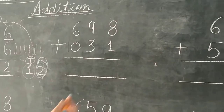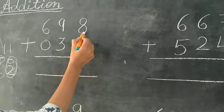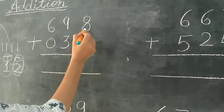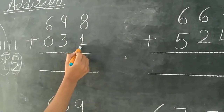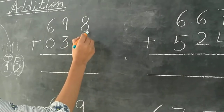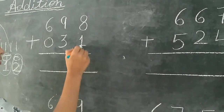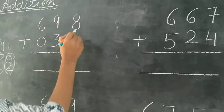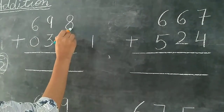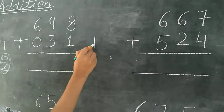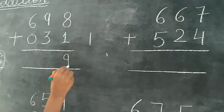Now next sum. 8 plus 1. Aapko 8 mein 1 plus karna hai. 8 is already right here, so we have to count 1 more. After 8: 8, 9. So we write here 9.